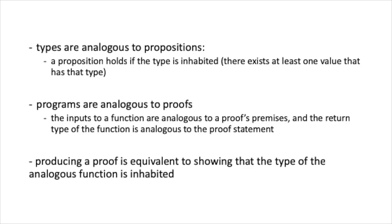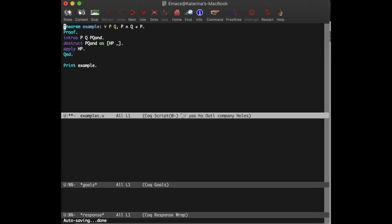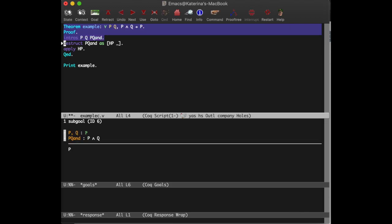And to show what analogous means in this context, let's take a look at an example in the formal proof management system, Coq. The syntax takes some getting used to, but we can start with a simple proof that for all p and q, p and q implies p. To show this logically, we first introduce the variables p and q, as well as the assumption that p and q holds. This leaves us with the goal of proving p true.